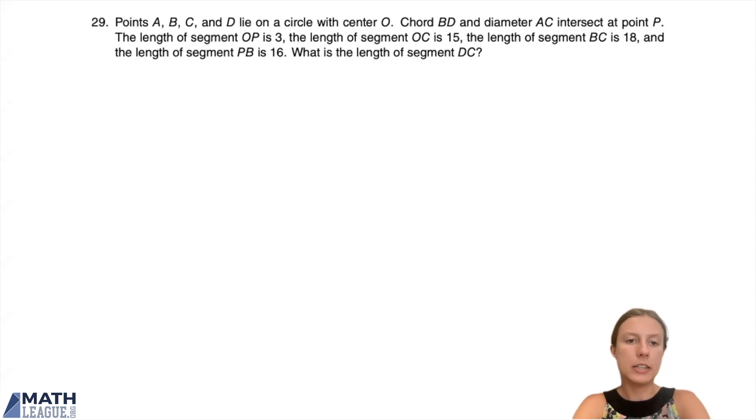Points A, B, C, and D lie on a circle with center O. Chord BD and diameter AC intersect at point P. The length of segment OP is 3, the length of segment OC is 15, the length of segment BC is 18, and the length of segment PB is 16. What is the length of segment DC?